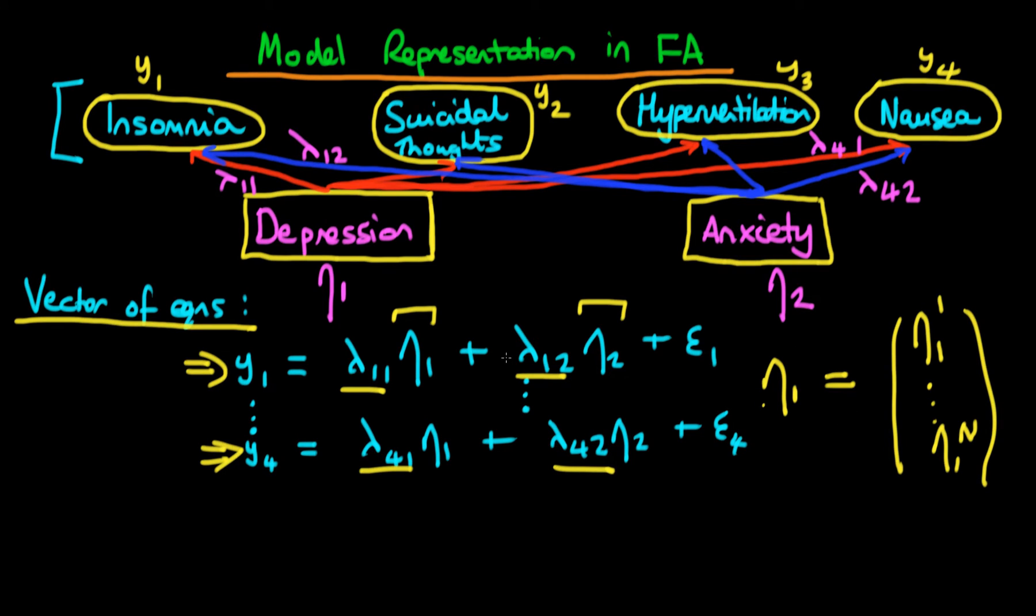Another thing to mention about factor analysis is why it is actually different to just multiple regression because on the face of it each of these individual equations just looks like a simple multiple regression equation. Well one of the ways in which it's different is that the only thing which we actually observe is the left hand side.